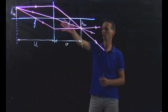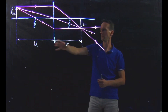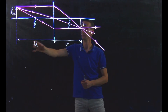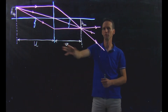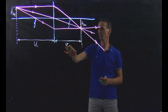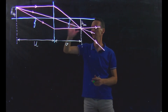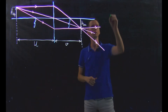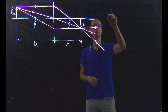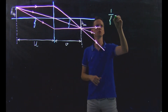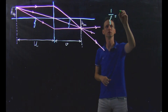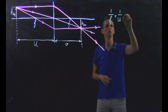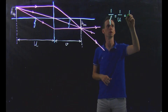Now if we have a focal distance f and an object distance u, the object will be at the image position v, where the relation between u, v, and f is given by the famous lensmaker's equation, stating that 1 over the focal distance equals 1 over u plus 1 over v.